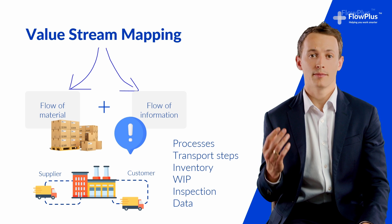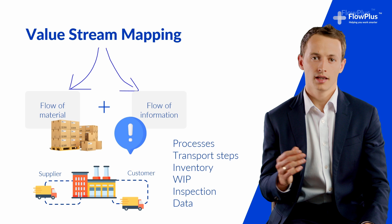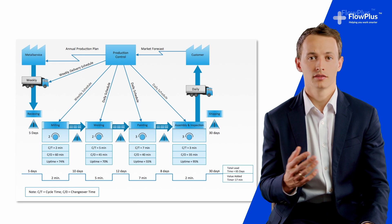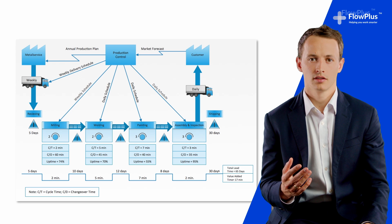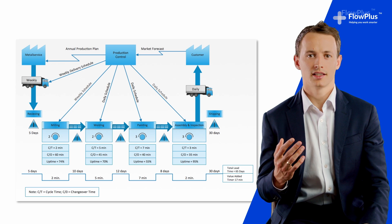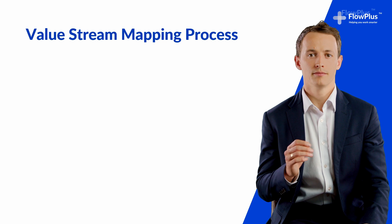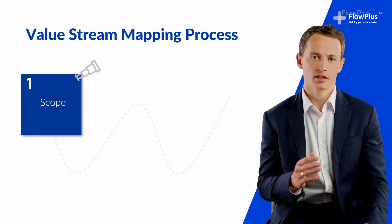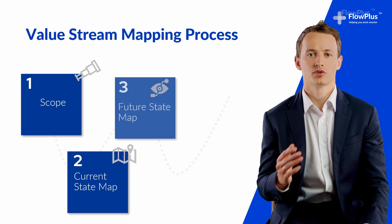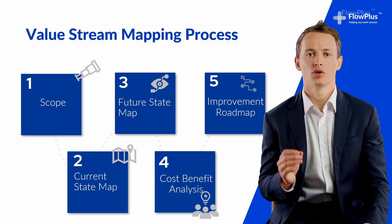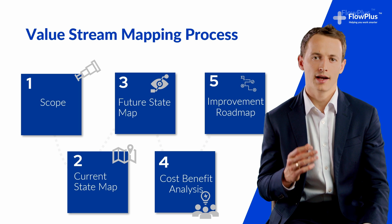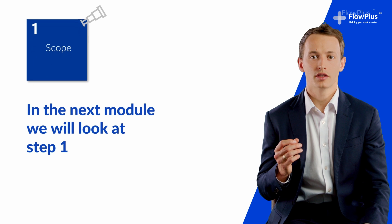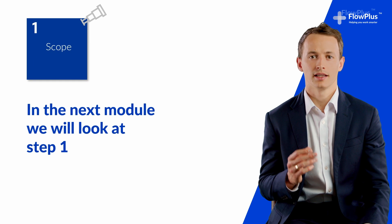This is what a value stream map visually looks like and by the end of the chapter, you'll be able to create one similar for a system of your choice. Value stream mapping follows five distinct steps. The methodology begins with defining the scope of your map and finishes with the creation of an improvement roadmap, outlining exactly what you need to do to improve and what the plan of action looks like. We'll start with the first step of the scoping in the next module.